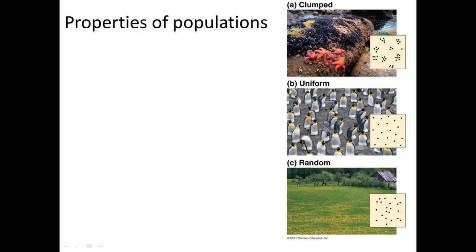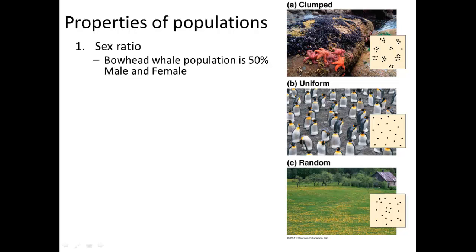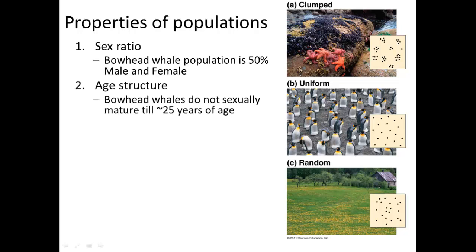Some important properties of populations include the sex ratio — how many males and females are in the area, which determines how reproductive they can be and how much their growth can sustain. In the bowhead whale population it's about 50-50, as it is in humans. Age structure is also important. Bowhead whales don't sexually mature until about 25 years of age, and because of this late age of sexual maturity, the older and bigger whales should be preserved so they can continue to reproduce.